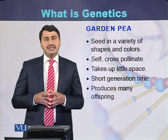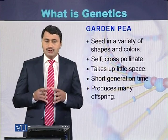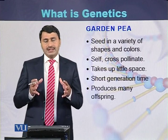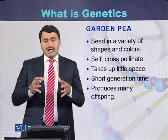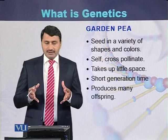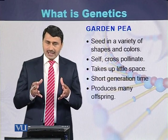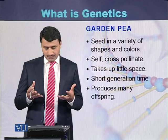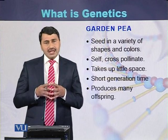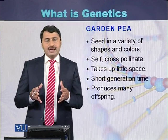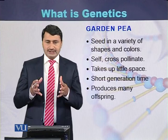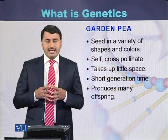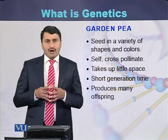The seed of garden pea is available in many varieties. This plant can self-pollinate as well as cross-pollinate. It takes little space to grow, has a short generation time — within two to three months one can grow it and get seeds — and it produces many offspring at a time. These characteristics helped Mendel perform experiments and formulate his laws.